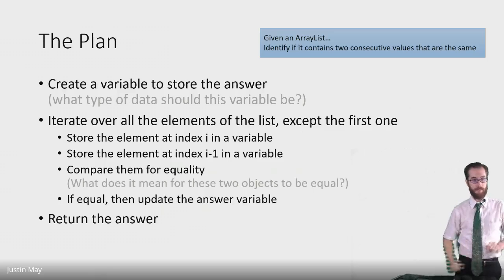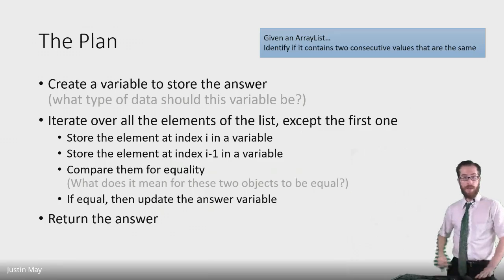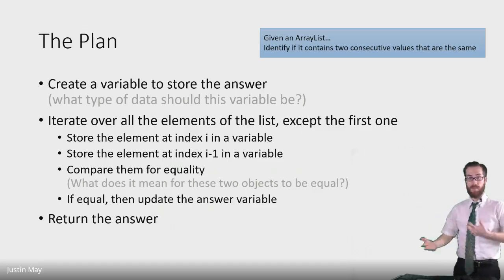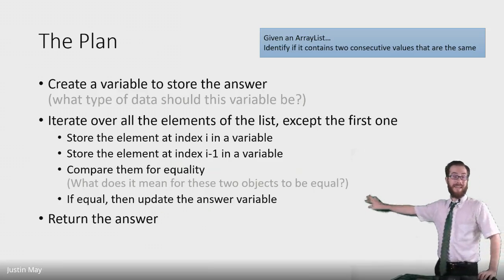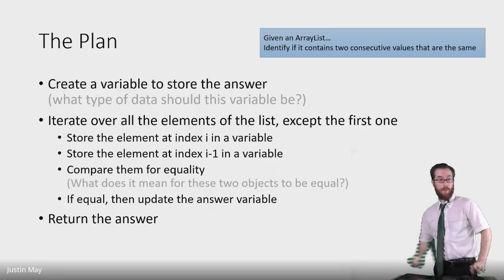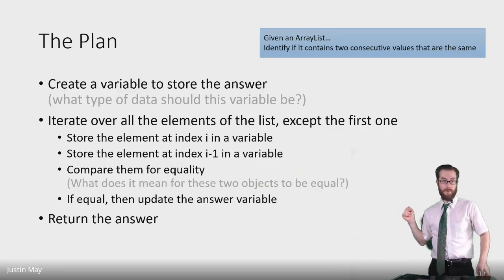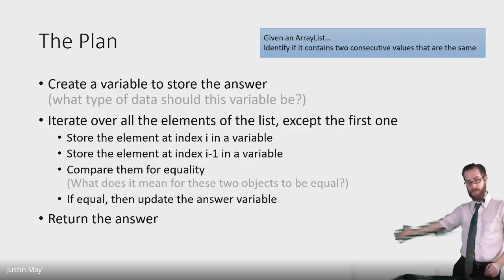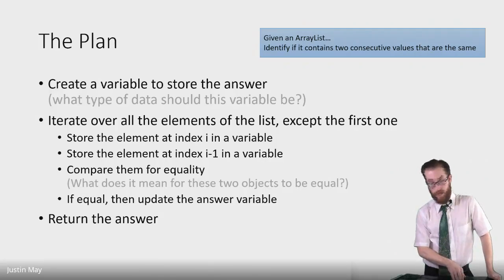Those go into their own variables. We compare those two variables for equality — what exactly that means depends on what you're comparing, depends on the problem. How do you tell if two things are equal? If they are equal, then we're going to update our answer variable, and then we will return our answer. So this is our algorithm. We're going to walk through this with a specific problem.